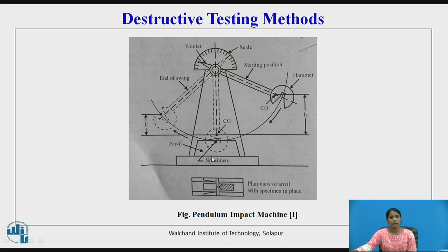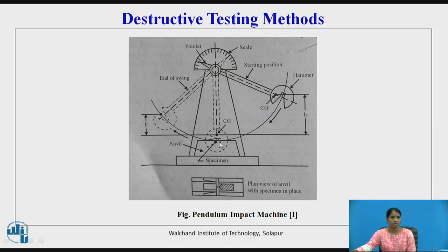This is the pendulum impact machine. The specimen is placed on the anvil. This is the hammer. This is the starting position of the hammer before impacting on the specimen. This is the reader scale pointer, and this is the end of the swing. The swing starts from this location, hits the specimen — either Charpy or IZOT — and then swings back.